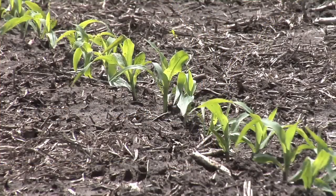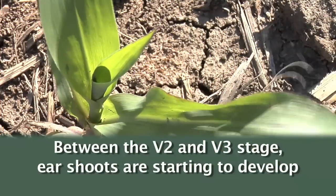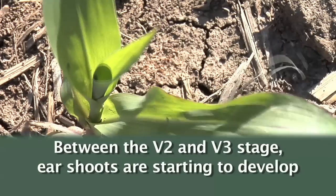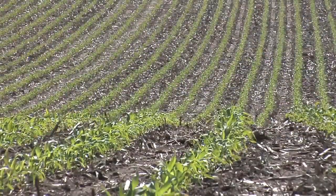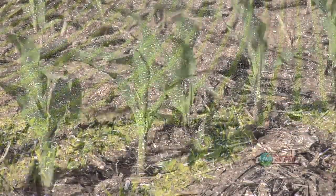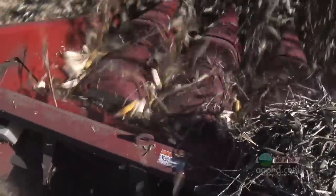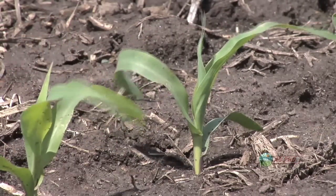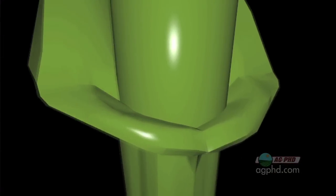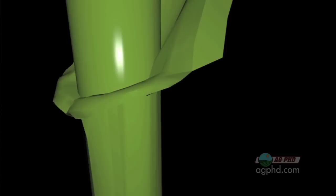One other important stage happens very early in the life of a corn plant at V2 to V3 — two to three collar corn — where the ear shoots are already being initiated. Farmers have to be very careful with their corn at a real early stage because it's already beginning those reproductive stages, and damaging that corn plant now could have an impact on yield later in the year. It's really important for farmers to know how to count leaf stages and understand that you don't get to the next leaf stage until that leaf develops a collar on it.